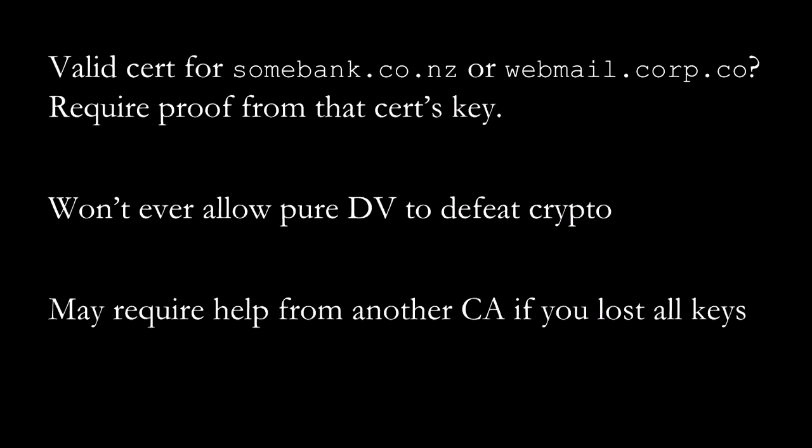If you're paying close attention, you'll realize that we protect ourselves essentially against misissuance for some bank in New Zealand that we've never heard of, or some corporate webmail system that is very important. Obviously in the case of addons.mozilla.org we'd notice — we have a blacklist — but we can't have a blacklist of every valuable domain on the internet. You'll notice there's a problem here: if you lost all your keys — your server crashed and you lost all the keys — you can wind up stuck because we see a certificate for you but you don't have the key anymore. In that case you will need to go to one of the existing certificate authorities and pay them money for a certificate to prove to us.